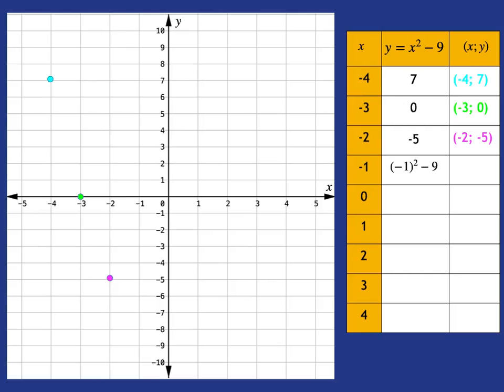x is negative 1, we do the same thing, and we have a coordinate pair, which we can plot on the graph. When x is 0, we work out that the y value is negative 9, and we go ahead and we plot that on the graph. When x is 1, we calculate that 1 squared minus 9 gives us negative 8, and we have a coordinate pair, which we can go and plot on the graph.